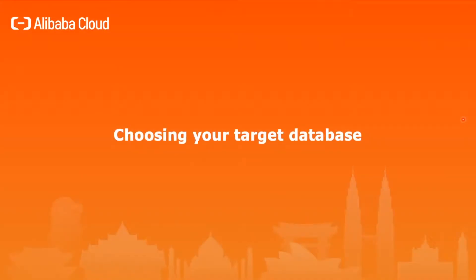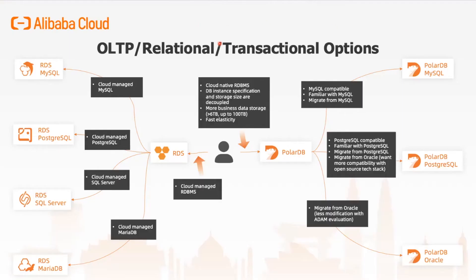Choosing your target database. If you have an OLTP or relational database that you would like to migrate to Alibaba Cloud, these are some of the workflows you can use to choose the right database. For example, if you are using MySQL, you can use our RDS MySQL. If it's Postgres, you can use RDS for Postgres. If you have a requirement on data storage — for example, you need up to 100TB or high elasticity — and you want a high-performance MySQL, you can always use PolarDB, our cloud-native OLTP database engine.